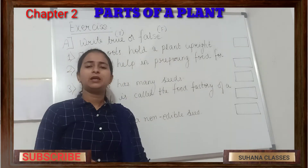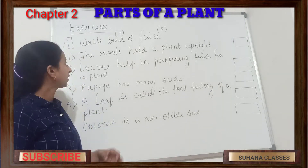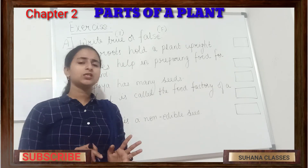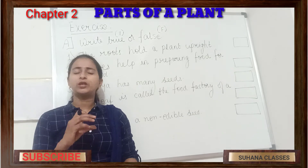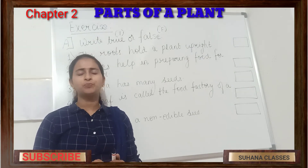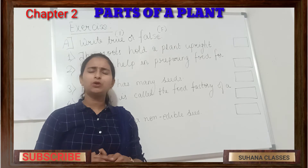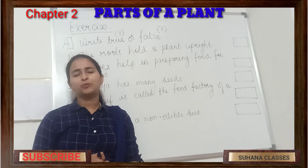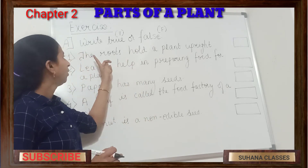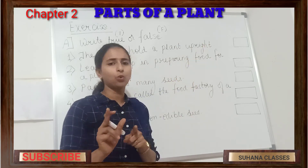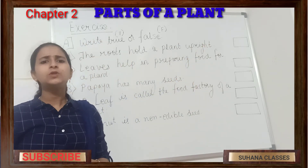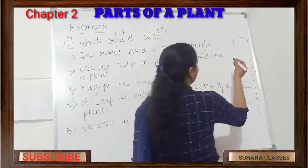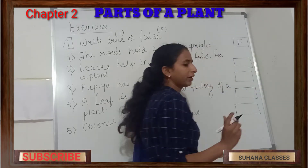Our first question is: Roots hold a plant upright. Is that correct? The main work of roots is to absorb water, minerals, and nutrients from the soil. Roots do not hold the plant upright — that is the work of the stem. So this statement is false, and I'm going to write F.